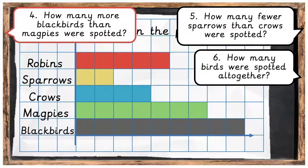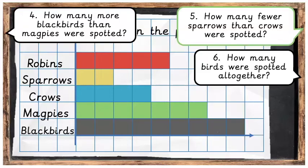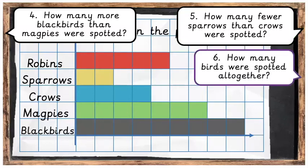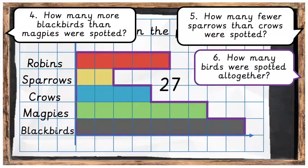Great work! OK, here are the answers. Question 4: how many more blackbirds than magpies were spotted? We can see here that there were 2 more blackbirds than magpies spotted. Question 5: how many fewer sparrows than crows were spotted? We can see here there were of course 2 fewer sparrows than crows spotted. And finally, question 6: how many birds were spotted all together? If you count up all the blocks, you will find that there were of course 27 birds spotted all together.